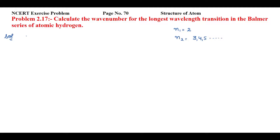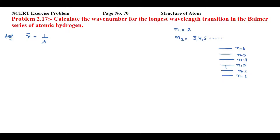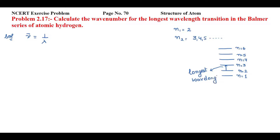We know that wave number (nu bar) is inversely proportional to wavelength. So if the wave number is less, we will have the longest wavelength. The transition starts from n equal to 2, and for the minimum wave number, the electron should jump from orbit 2 to orbit 3. This gives us the longest wavelength.